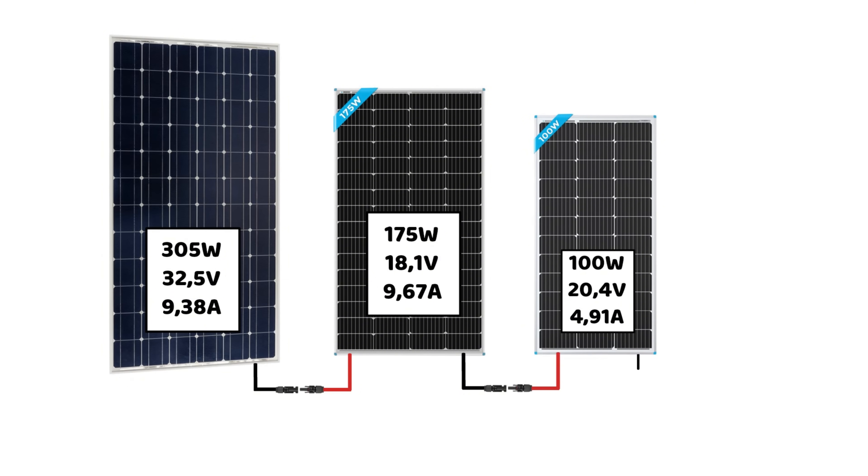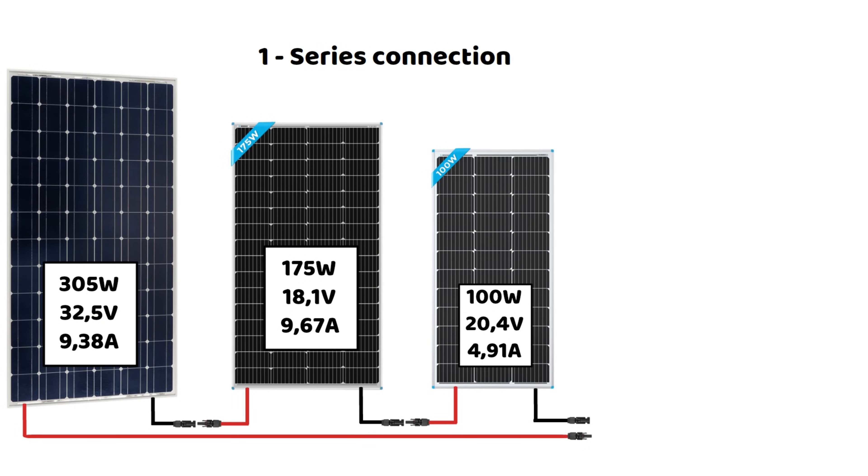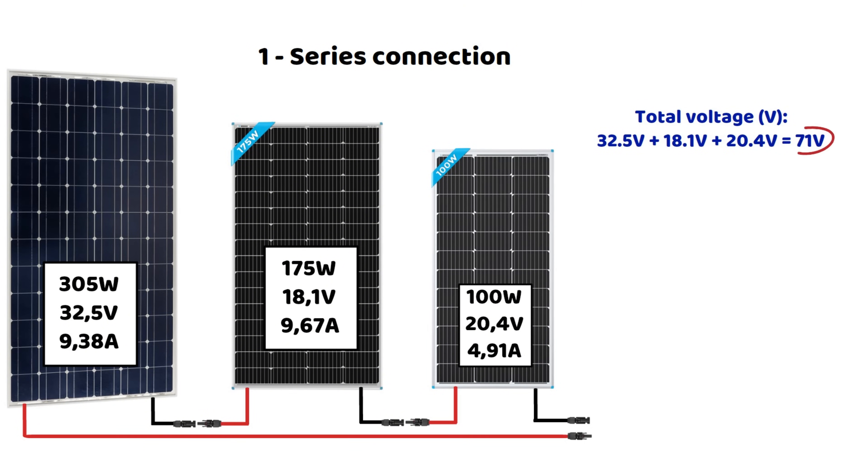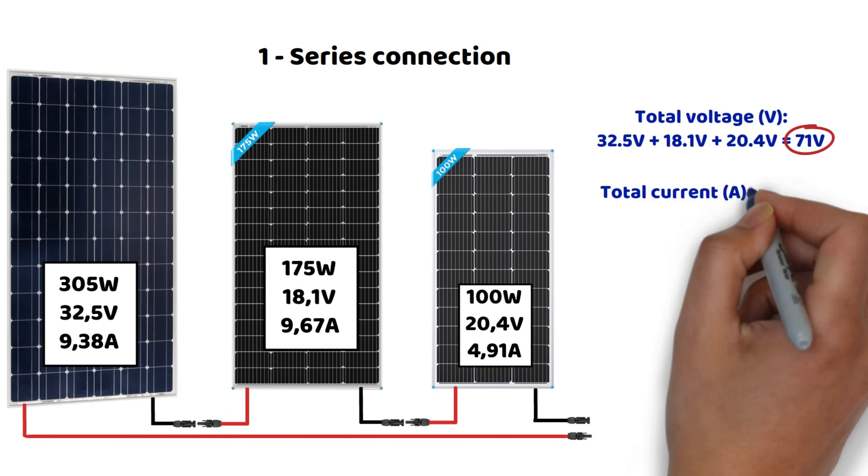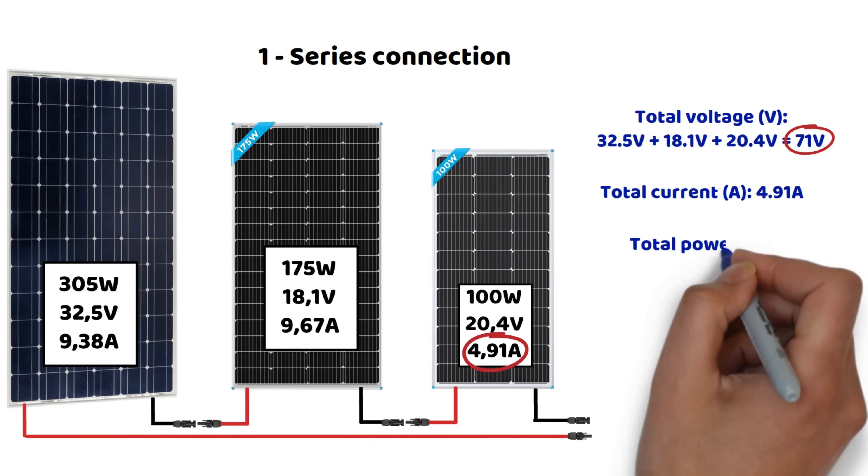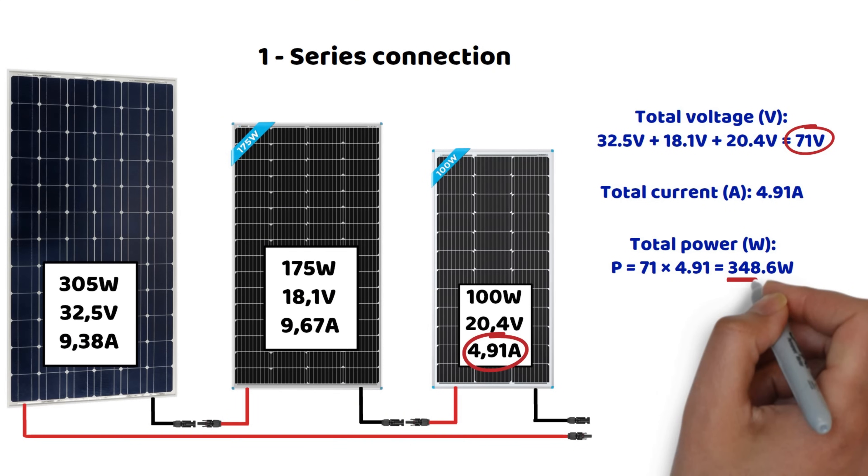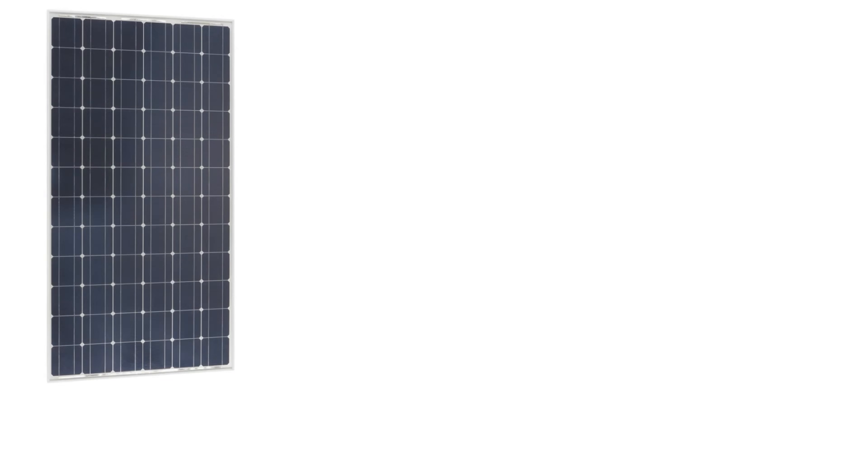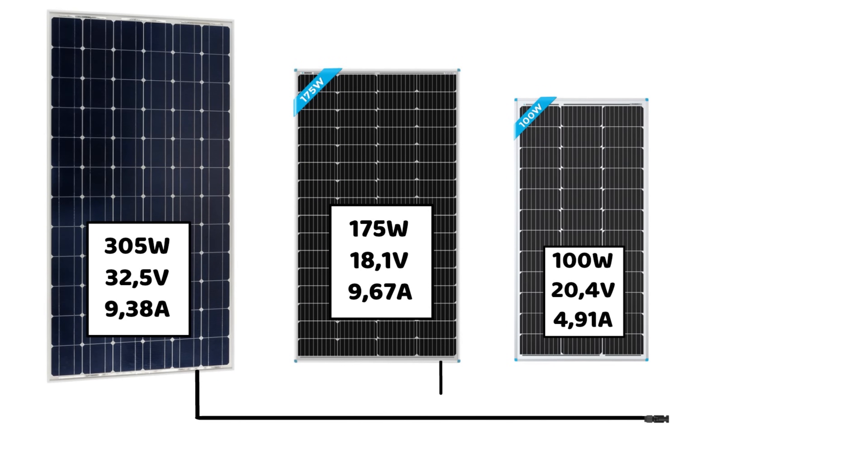As a reminder, in a series connection, the voltages add up, and the current in amperes will be limited by the panel with the lowest current. So this gives us a total voltage of 32.5 plus 18.1 plus 20.4 equals 71 volts. The total current will be limited to the lowest current value, which is 4.91 amps. The total power is therefore calculated by multiplying 71 volts by 4.91 amps, which gives us 348.6 watts, while the theoretical power is 580 watts. That's really not great, is it? The efficiency will therefore be only 60.1%. This is a very inefficient configuration that we cannot consider.